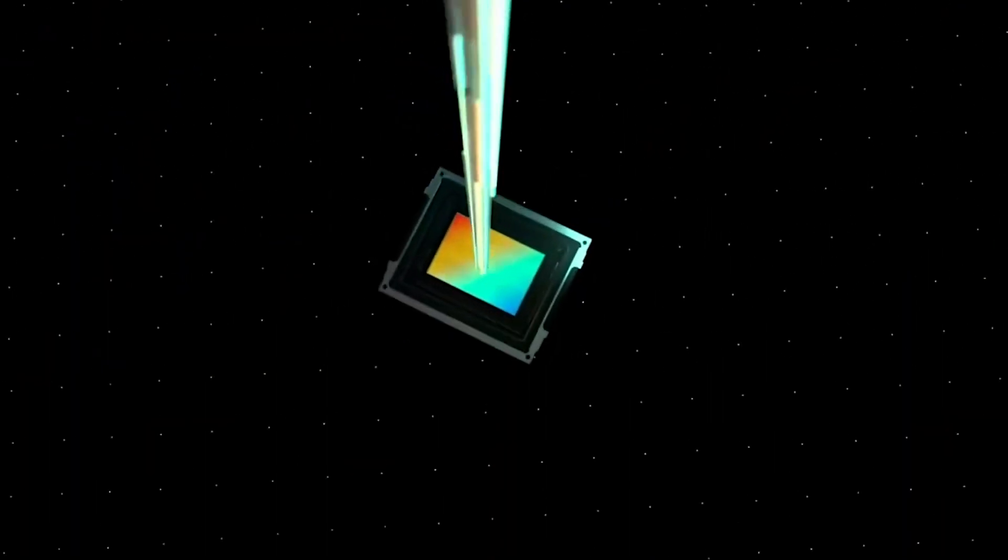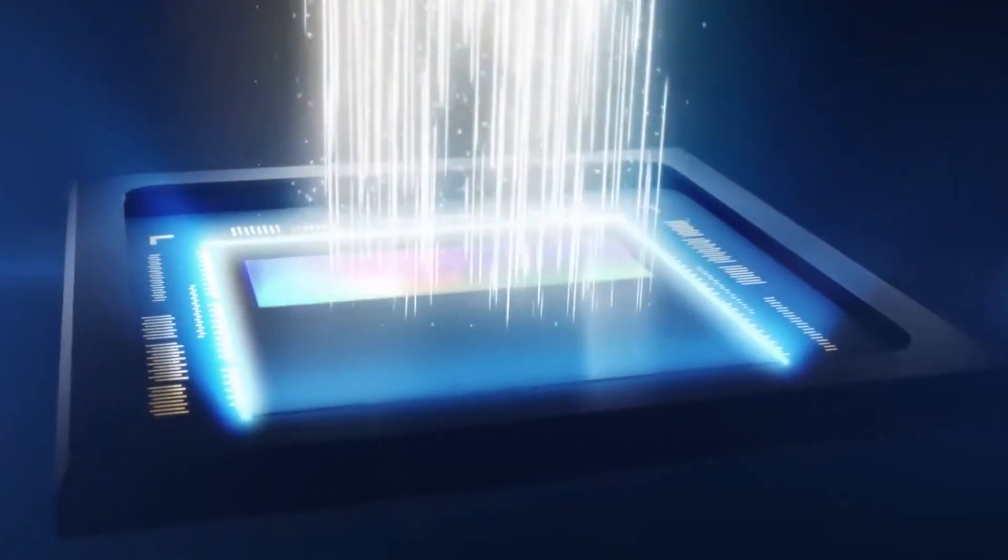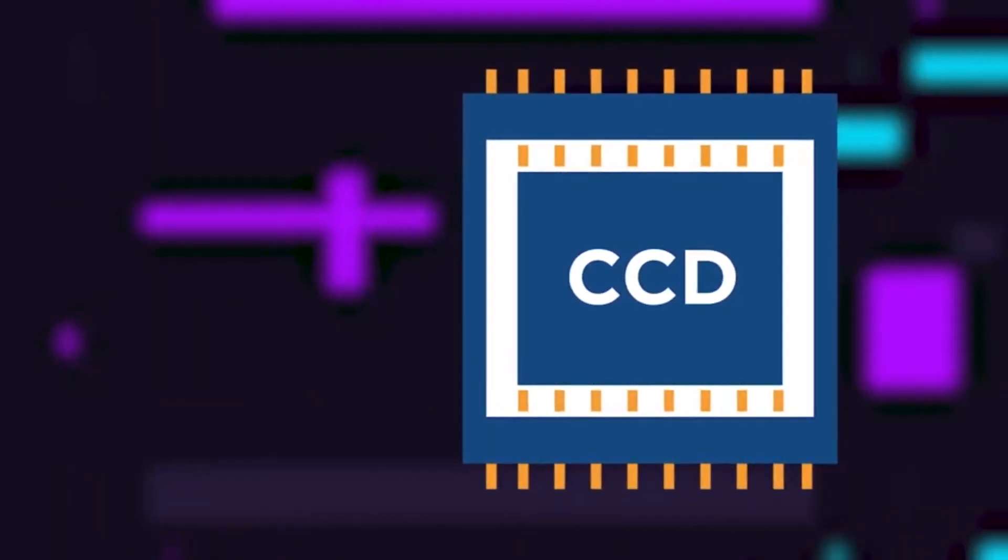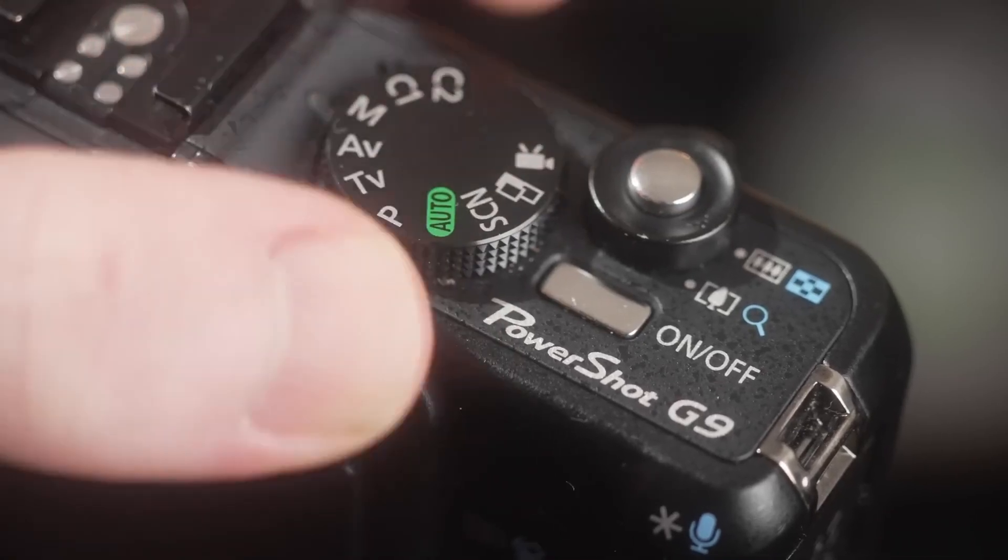When it comes to digital imaging technology, two popular options are complementary metal oxide semiconductor, or CMOS, and charge-coupled device, or CCD sensors. Both of these technologies have their strengths and weaknesses, and choosing the right one for your application can be a challenge.